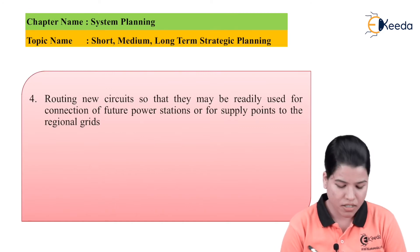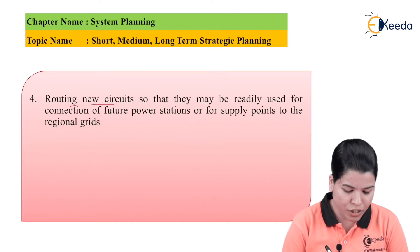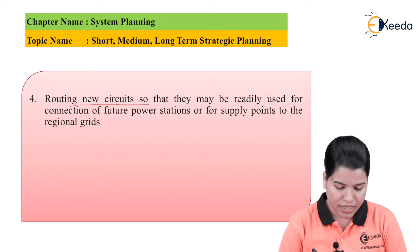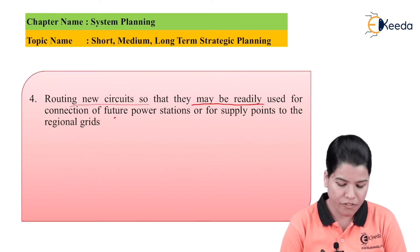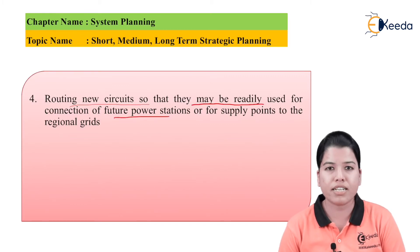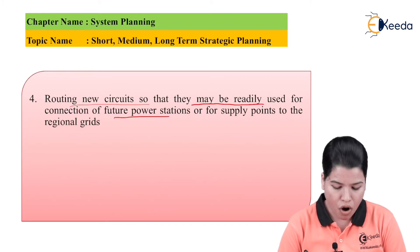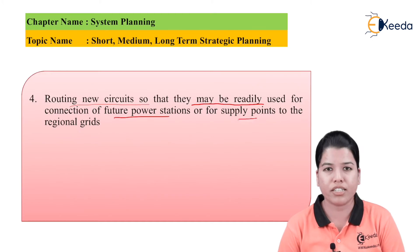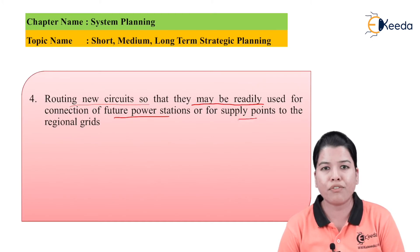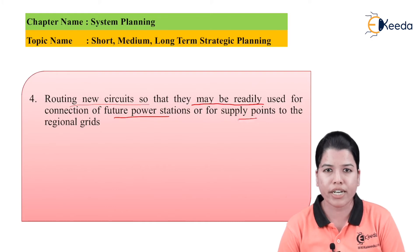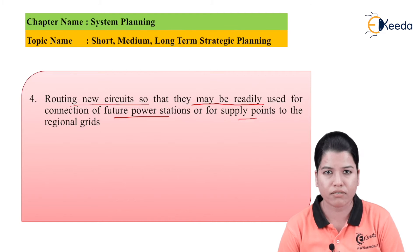Next aim is routing new circuits so that they may be readily used for the connection of a future power station or for the supply point to the regional grids. In case there is a future requirement for expansion of the power system, the circuits should already be routed so that they can be connected whenever required.